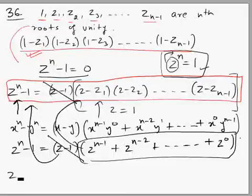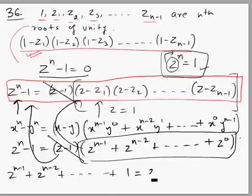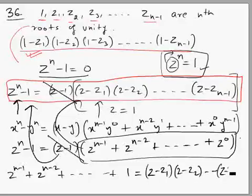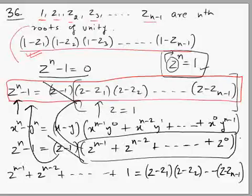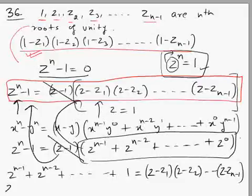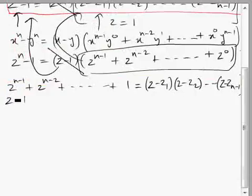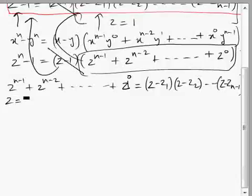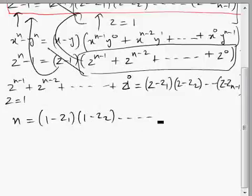After cancelling the (z − 1) factor, we get the new identity: z^(n-1) + z^(n-2) + ... + 1 = (1 − z1)(1 − z2)...(1 − z(n-1)). This is an independent identity, valid for any value of z. Now putting z = 1: there are n terms on the left, each becoming 1, so the left side equals n. Therefore the value of the expression (1 − z1)(1 − z2)...(1 − z(n-1)) is n.